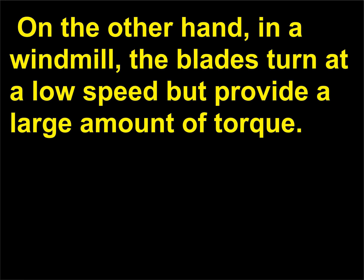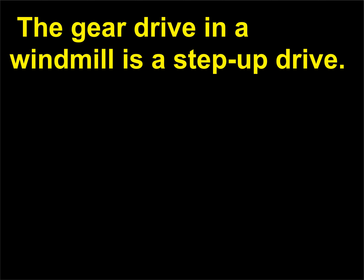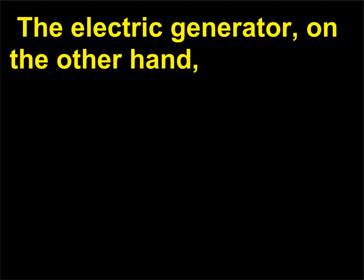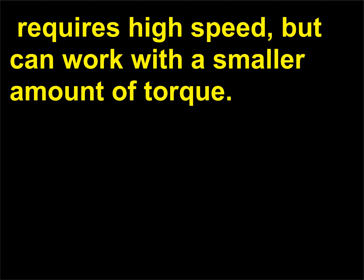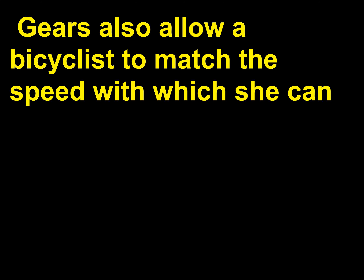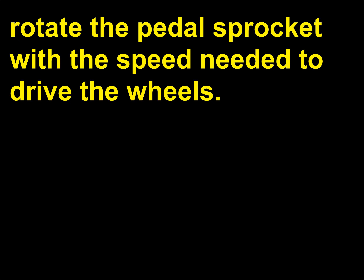On the other hand, in a windmill the blades turn at a low speed but provide a large amount of torque. The gear drive in a windmill is a step-up drive. The electric generator, on the other hand, requires high speed but can work with a smaller amount of torque. Gears also allow a bicyclist to match the speed with which she can rotate the pedal sprocket with the speed needed to drive the wheels.